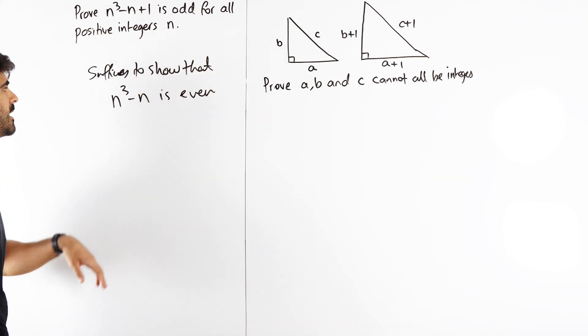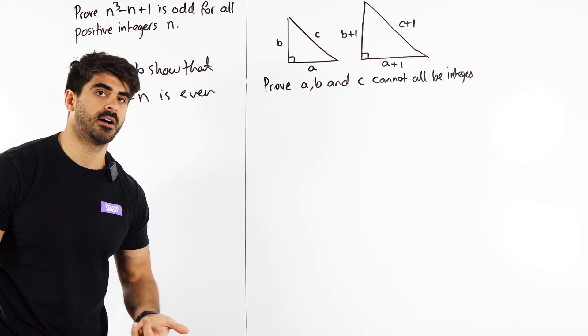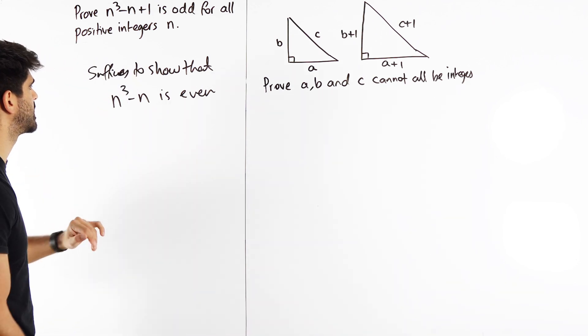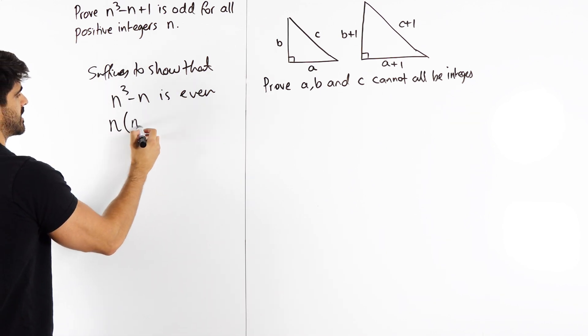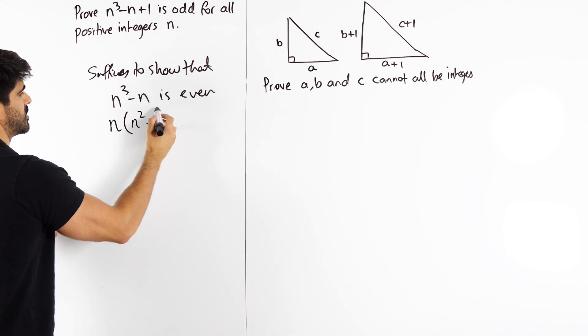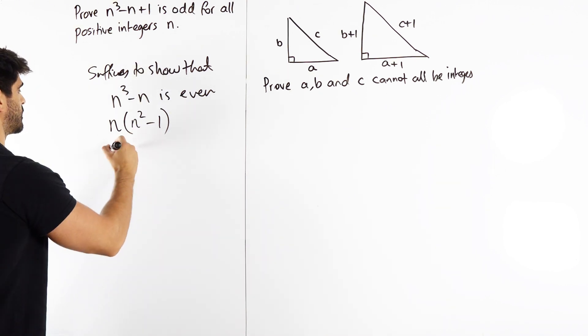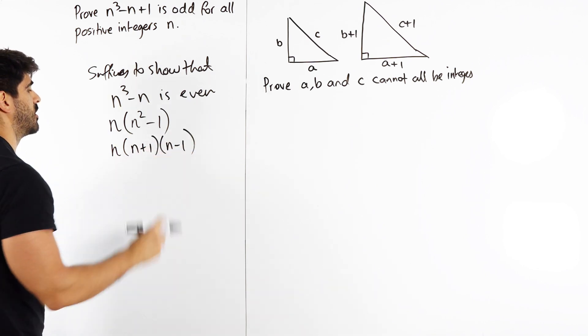Now what can we do with that? Well, when I see n³ - n, it's a cubic but we don't need to factorize the cubic into three brackets because there's no numbers here. We can just factorize out n. If I take out n, n³ over n is n² minus n over n is 1. What do I notice about that? That's difference of two squares: n + 1, n - 1.